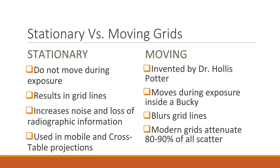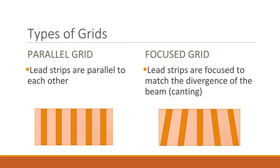Modern grids have come a long way and are capable of attenuating 80–90% of all scatter radiation. Other grid variations include how the lead strips are arranged. A parallel grid has strips that are vertical and parallel to one another, while a focused grid has the lead strips at a slight angle to better align to the divergence of the x-ray beam. This is called canting of the lead strips and is common in most modern-day grids.